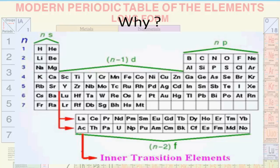The outermost d and f subshells lie close together in energy levels, leading to some irregularity in the electronic configuration of each element. This creates uncertainty about whether to place certain elements in the transition or inner transition group. For example, lanthanum and actinium have no electrons in their f-subshell and best fit in group 3. Cerium and thorium also have no f-electron but are considered part of the inner transition element series. The common arrangement places the inner transition metals between groups 3 and 4.